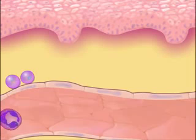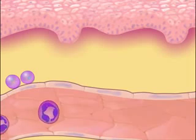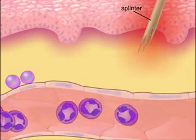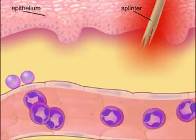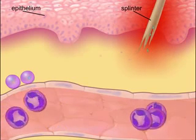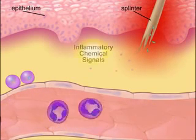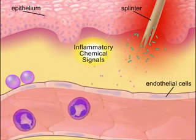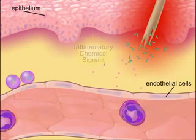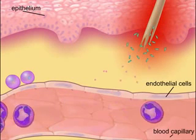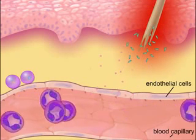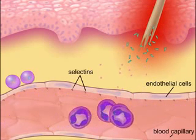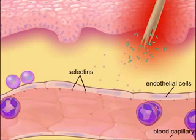The inflammatory response is an important, nonspecific defense against tissue damage. It begins when injured tissue cells release chemical signals that activate the endothelial cells of nearby capillaries. Within the capillaries, adhesion molecules called selectins are displayed on the activated endothelial cells.